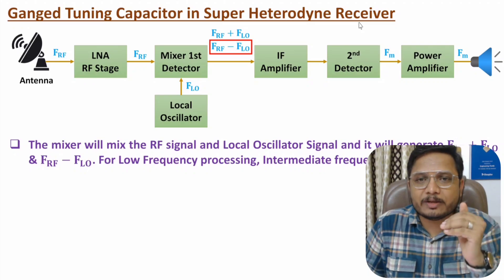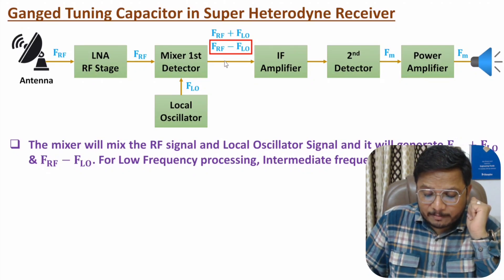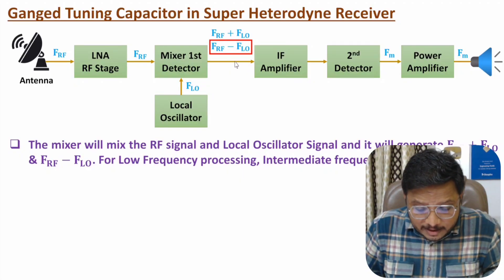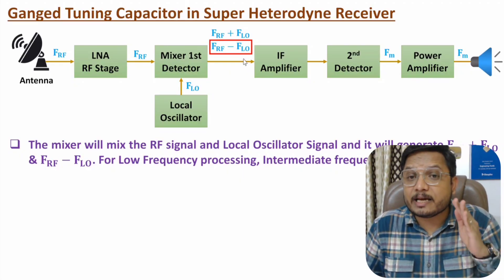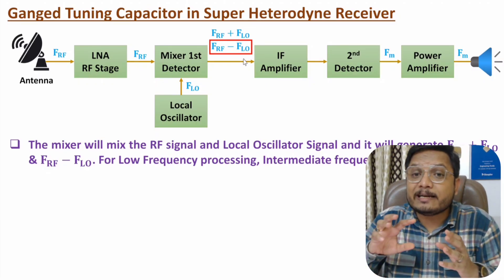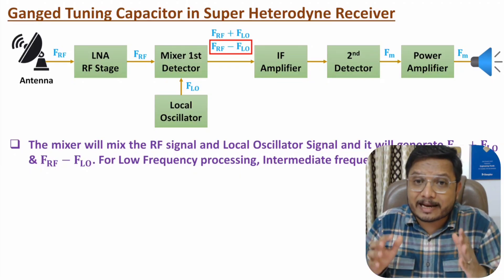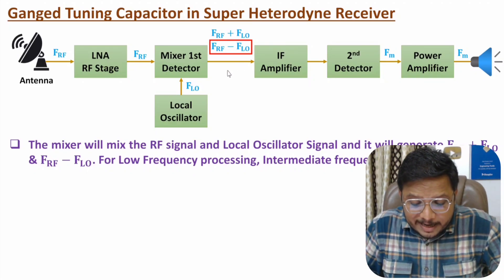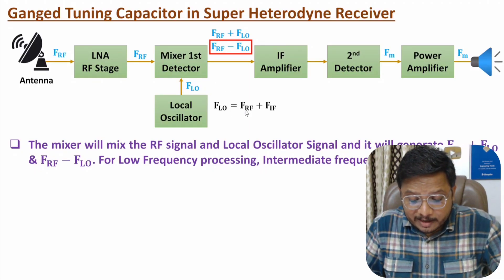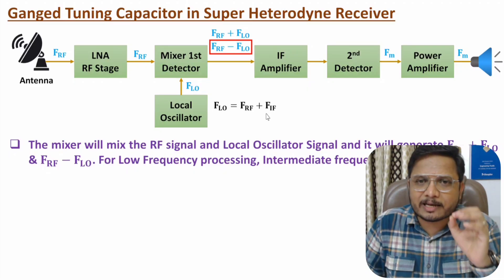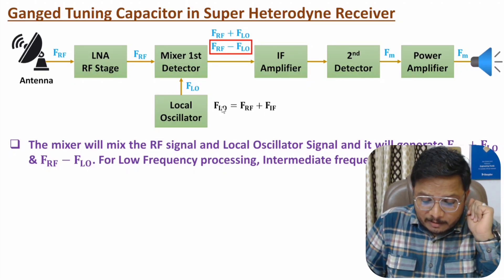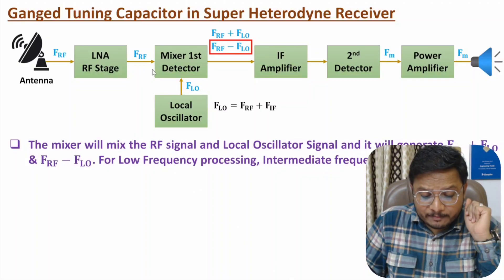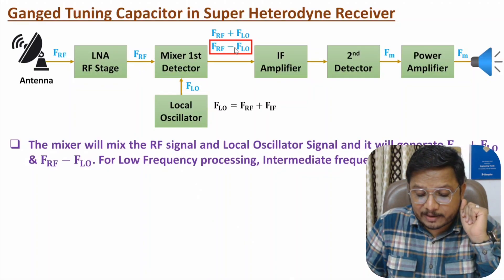Why is there a need for a ganged tuning capacitor? The intermediate frequency should be constant. If the intermediate frequency is not constant, there can be an issue with quality factor — if the intermediate frequency changes, the quality factor of the circuit will change and that will deteriorate performance. So our basic agenda is to keep the intermediate frequency constant. Here FLO = FRF + FIF. After taking the difference, one can have FRF minus FLO equal to FIF.